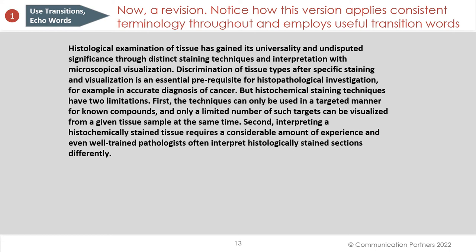Now our revision applies consistent terminology and employs useful transition words. Histological examination of tissue uses visualization — a special kind of interpretation. Tissue types. Visualization. But histochemical staining techniques have two limitations, and we signal a list. First, the techniques can only be used in a targeted manner, and the targets are visualized from a given tissue sample. Second, interpreting a histochemically stained tissue requires a considerable amount of expertise, and even well-trained pathologists often interpret histologically stained sections differently. Consistent terms applied consistently — that makes a much better paragraph.